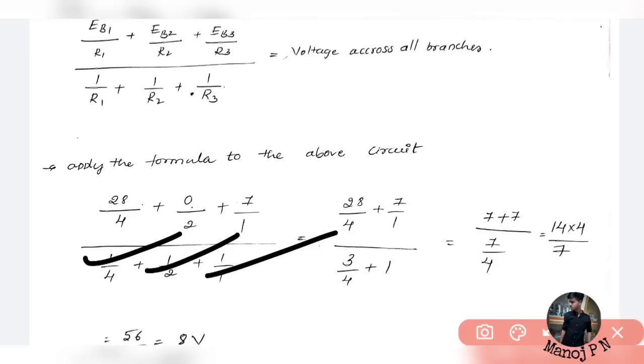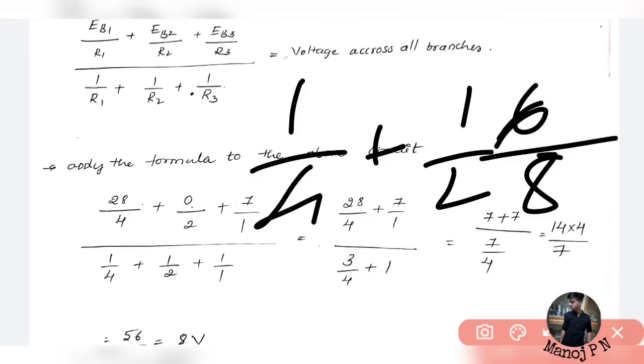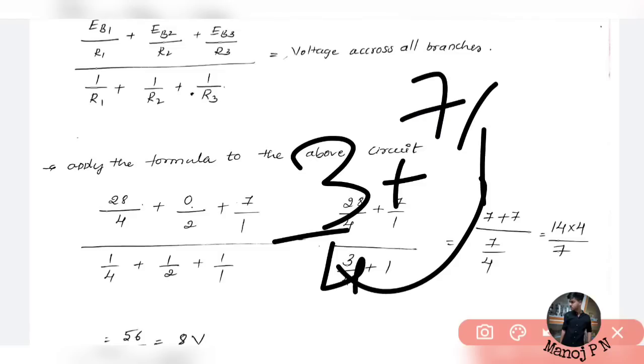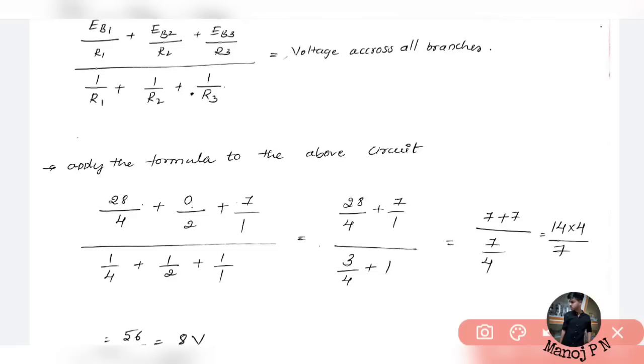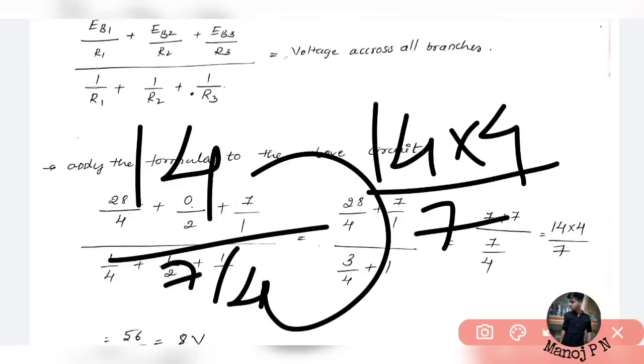Next, plus Eb3. What is Eb3? Battery 3, that will be 7 divided by R3, which is 1. So 7 divided by 1. 28 divided by 4 and 0 divided by 2 is the numerator. And denominator is very simple: 1 divided by R1 plus 1 divided by R2 plus 1 divided by R3. If we simplify this, the entire term will become 0. Then 1/4 plus 7, which is 7 plus 7 equals 14. And denominator: 1/4 plus 1/2 plus 1 equals 3 plus 4 divided by 4, which is 7/4.